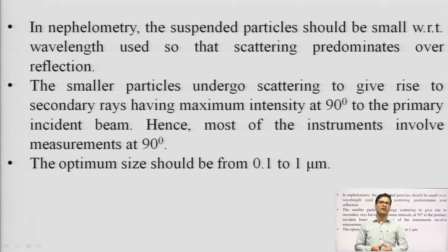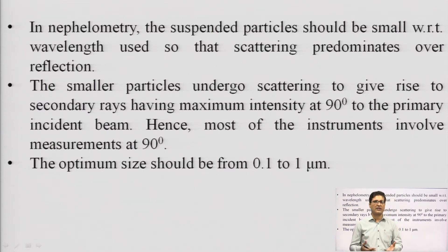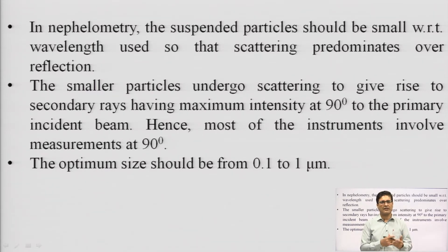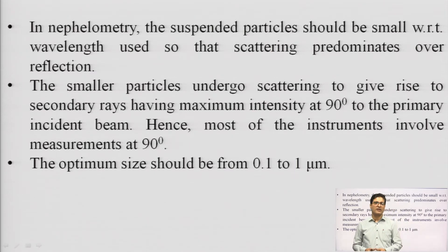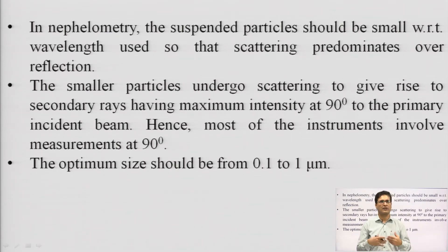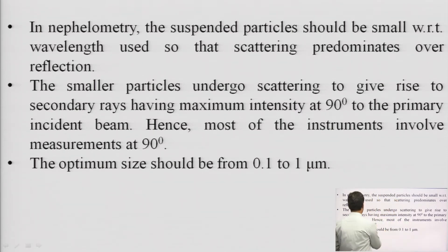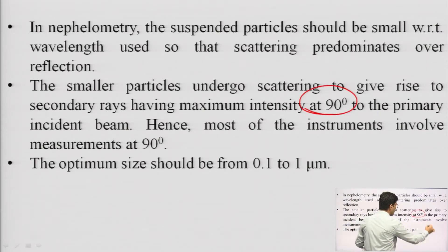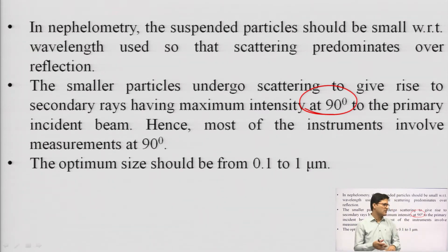In nephelometry, the suspended particles should be small with respect to the wavelength, because when particle size increases, reflections also increase, which can cause additional loss of light intensity. Scattering is higher when particle size is smaller. For shorter wavelengths in less dense media, scattering will be good enough to determine easily. Smaller particles undergo scattering to give rise to secondary radiations detected at 90 degrees. The optimum particle size for nephelometry is recommended to be 0.1 to 1 micrometer.